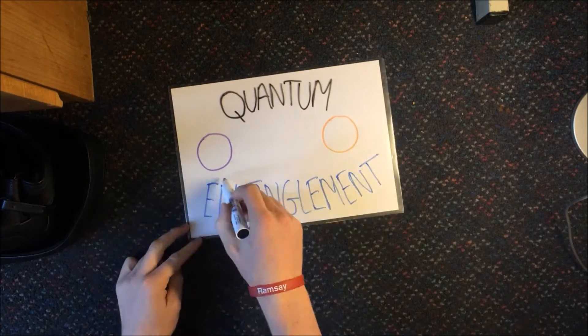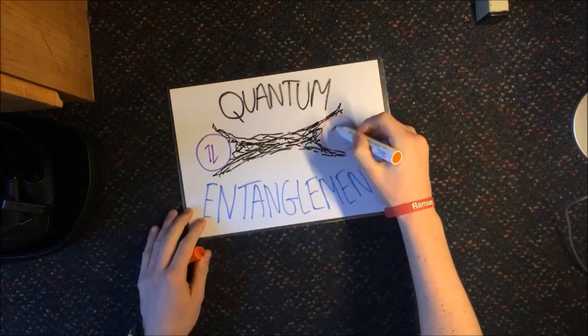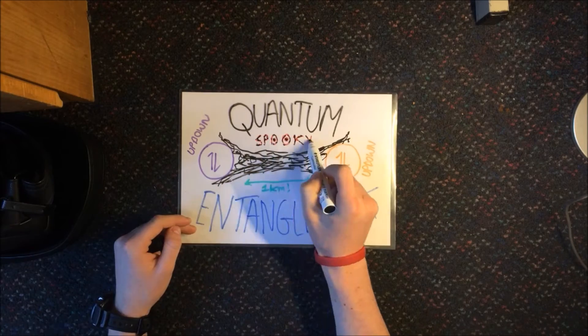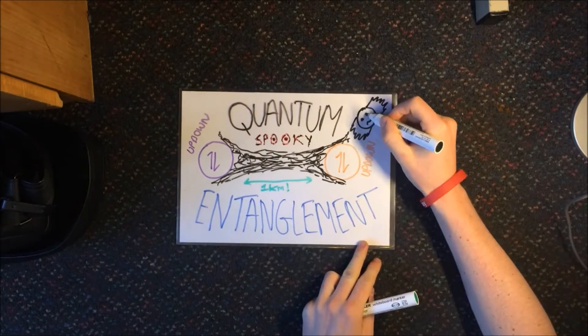You can think of this as the two particles are connected by very stretchy spaghetti. They can get further apart and they're still connected. Quantum entanglement is what made Einstein coin the phrase, spooky action at a distance.